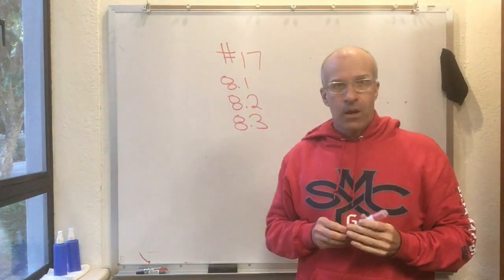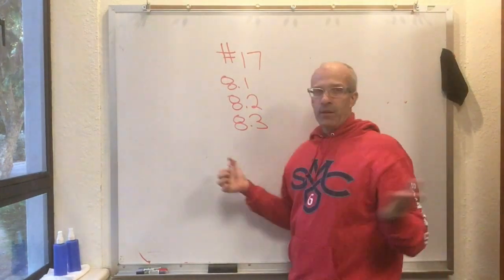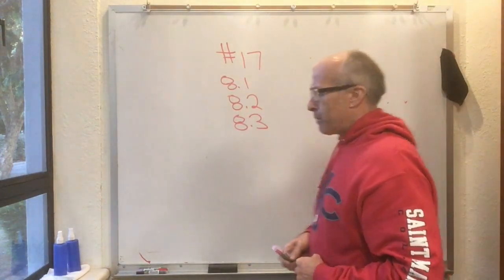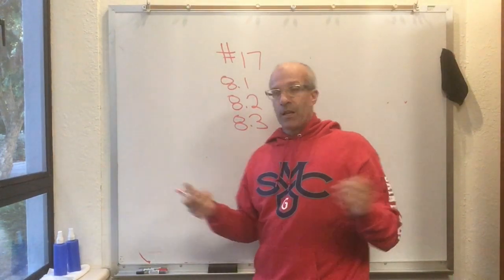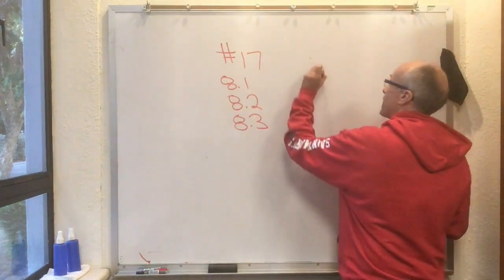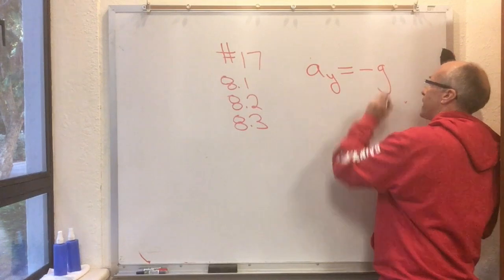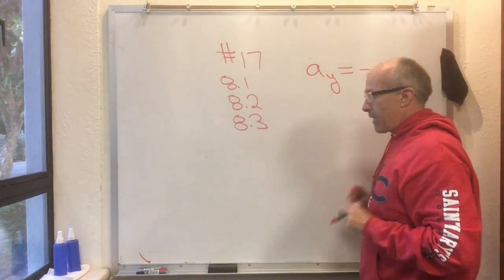In section 8.1, Knight brings projectile motion back to you, but in a slightly different language. Before, we just said there was an acceleration in the y direction with value minus g. And that was that.